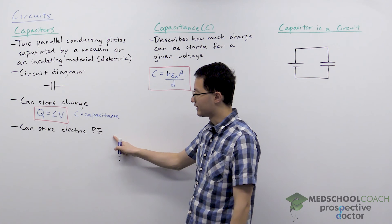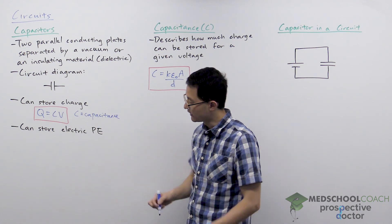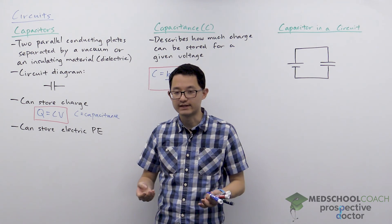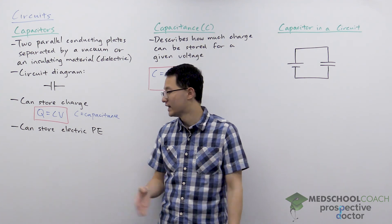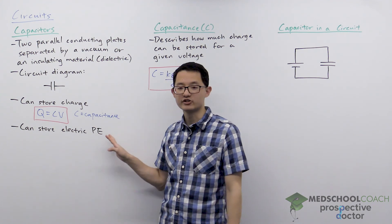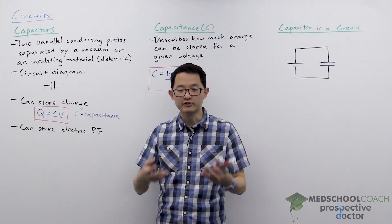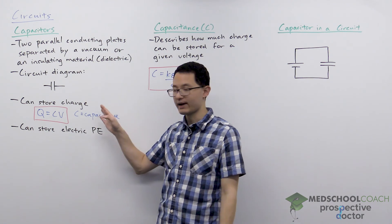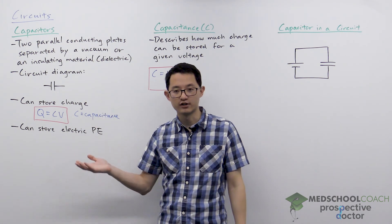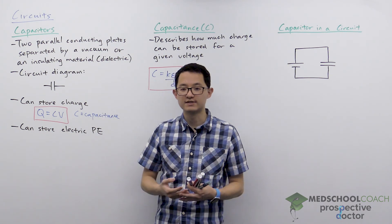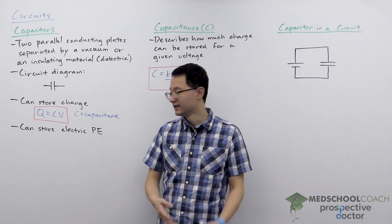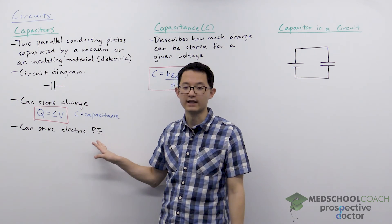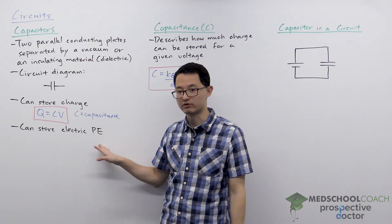If a capacitor is capable of storing a potential difference, it can store a voltage, and a voltage can be used to produce electrical current. So essentially a charged capacitor can serve the same function as a battery, which means the capacitor can also store electric potential energy.